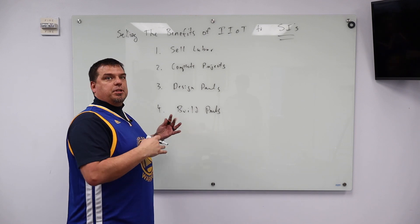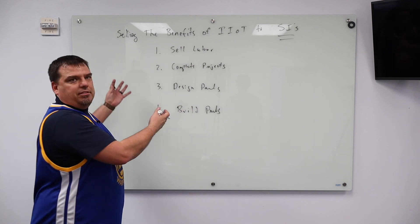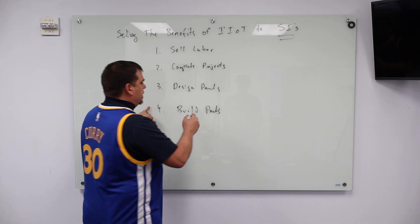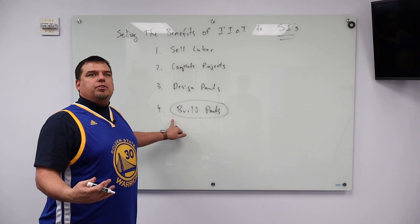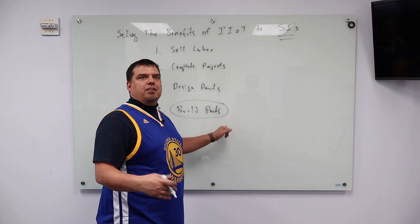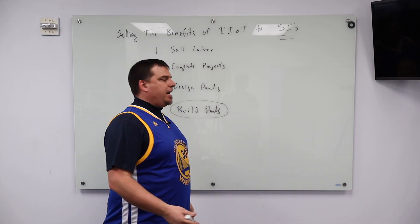And last month we talked about the industry 3.0 systems integrator. This is basically their business model. When it comes to building panels, they want to build the same panel over and over and over again. That's where they capture their profit. The first time they build the panel, they probably break even, but they get more efficient each subsequent time they build the panel.